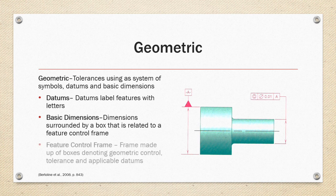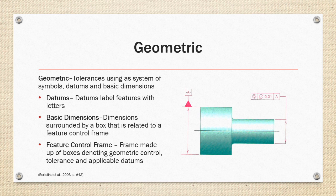The feature control frame is made up of boxes denoting geometric control tolerance and applicable datums. The feature control frame in the example shown on the right calls for the smaller diameter on the object to be concentric to datum A within a diameter of 0.01 by displaying the graphic symbol for concentric, the tolerance, and the associated datum A.